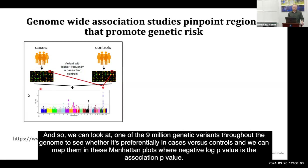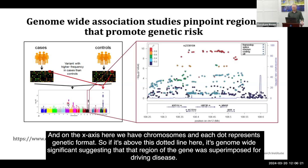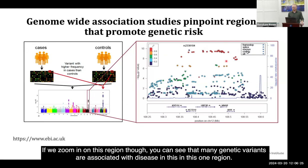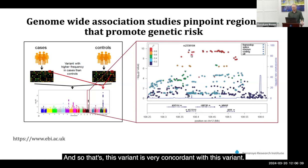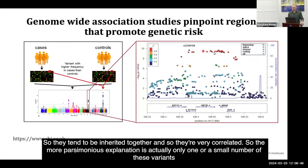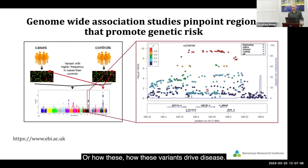We can look at one of the 9 million genetic variants throughout the genome to see whether it's preferentially in cases versus controls, and map them in Manhattan plots where the negative log p-value is the association p-value, chromosomes are on the x-axis, and each dot represents a genetic variant. If it's above the dotted line, it's genome-wide significant, suggesting that region of the genome is important for driving disease. However, zooming in, many genetic variants are associated with disease in one region due to linkage disequilibrium — they tend to be inherited together. The more parsimonious explanation is that only one or a small number of these variants actually drives disease, and most are outside of genes, so we don't know the causal gene or mechanism.